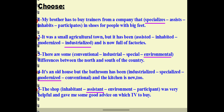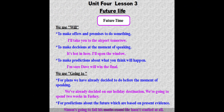Number one: My brother has to buy trainers from a company that specializes in shoes for people with big feet. Number two: It was a small agricultural town but it has been industrialized and is now full of factories. Number three: There are some environmental differences between the north and south of the country. Number four: It's an old house but the bathroom has been modernized. Number five: The shop assistant was very helpful and gave me some good advice on which TV to buy.